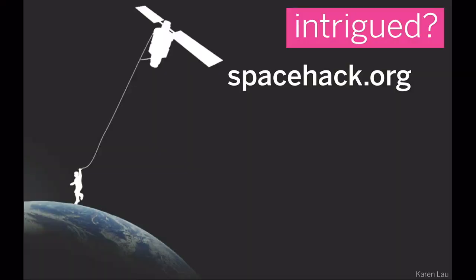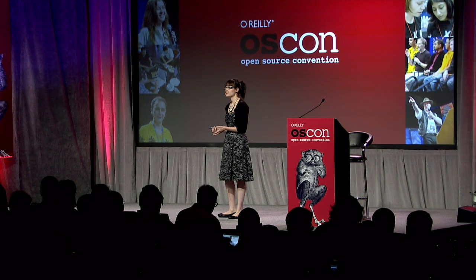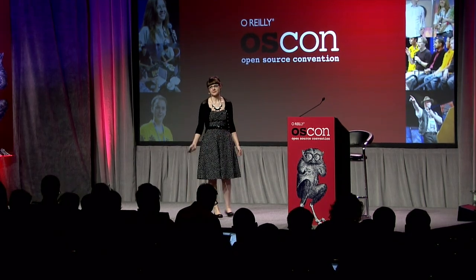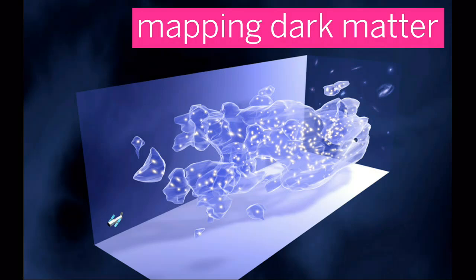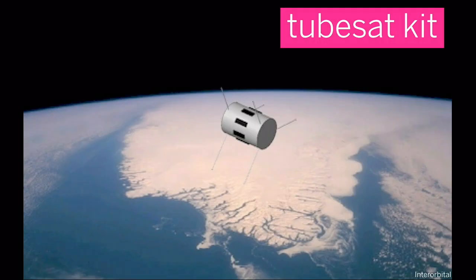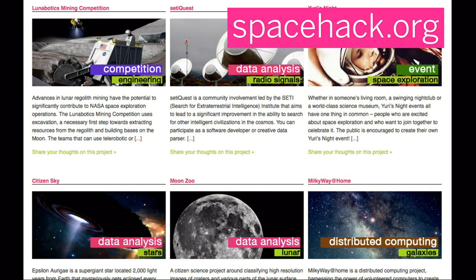If you're intrigued about how you can actively contribute to space exploration, there are a lot of these types of projects on a site called spacehack.org, which I created when I left NASA. It's essentially a directory of ways to participate in space exploration. There are projects like mapping dark matter, where you can try to make algorithms that measure dark matter better than current ones. There's Google Lunar XPRIZE where you can join a team sending a robot to the moon. There's the TubeSat Kit where you can build and launch your own satellite for $8,000.